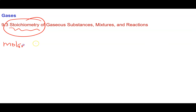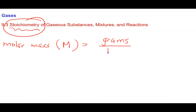Molar mass in general chemistry is often given the abbreviation uppercase M, and what it means is the number of grams in one mole of a substance. The units are grams per mole, or we can write grams moles to the minus one, whatever happens to be the most convenient in a particular situation.